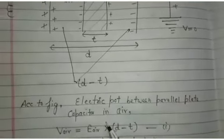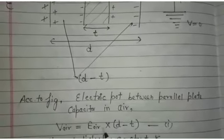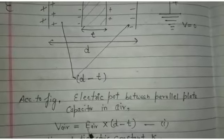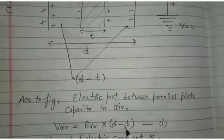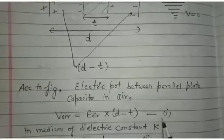In case of air the relation between V and E, V is equal to E into R. So V_air is equal to E into the separation between two plates in air d minus t, equation first.